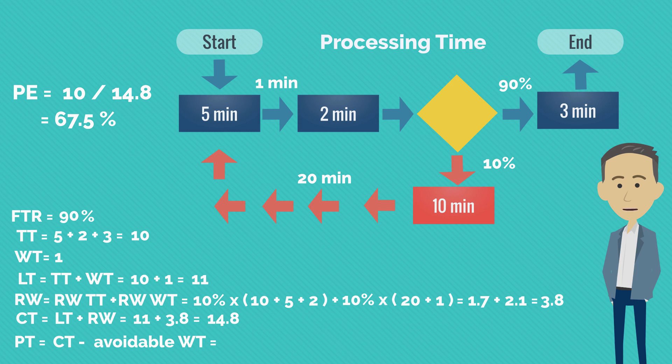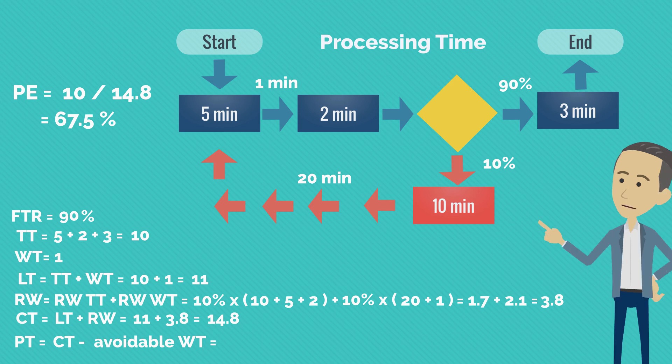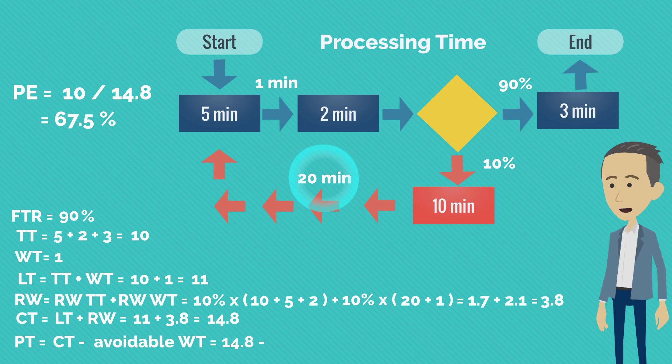So avoidable waiting time means those waiting times in which employees are not blocked but can actually work on something else. In our case, we are talking about those 20 minutes from the rework loop in which an employee can work on another unit. So processing time is 14.8 minutes minus 10% multiplied with 20 minutes, which equals 12.8 minutes.